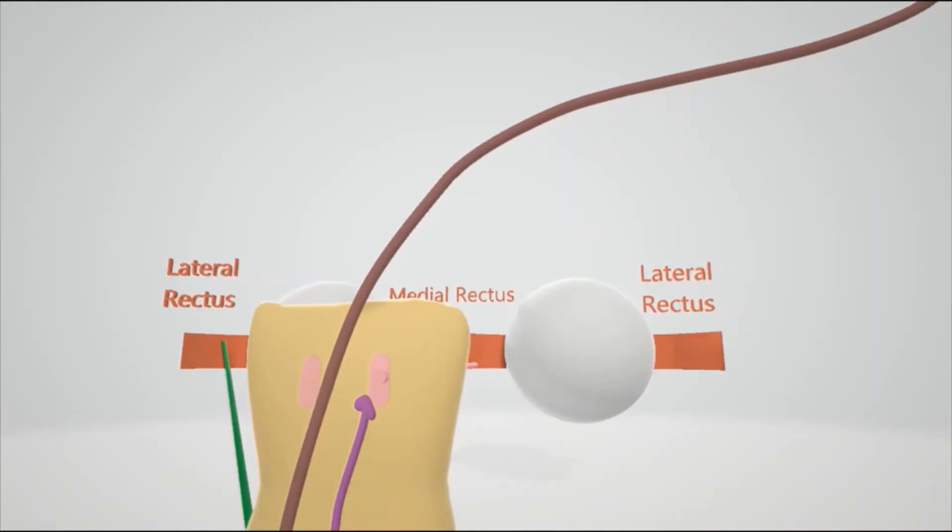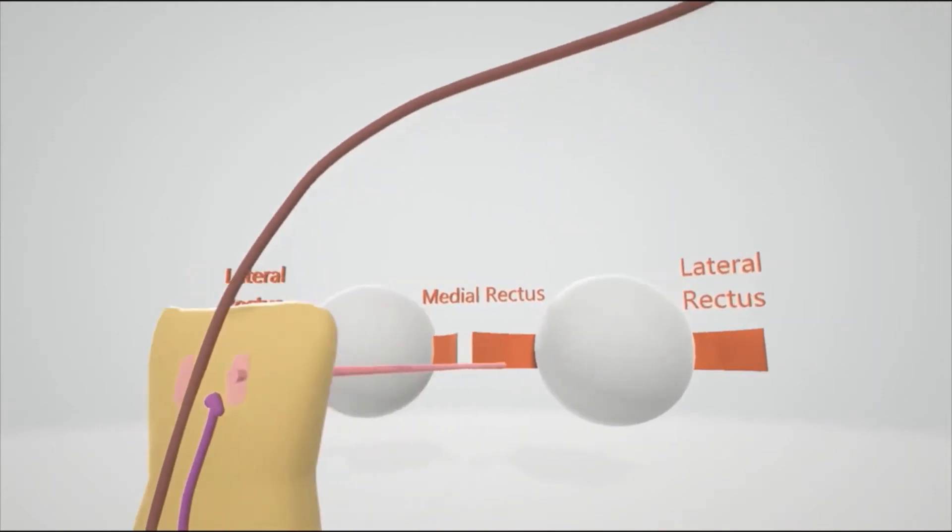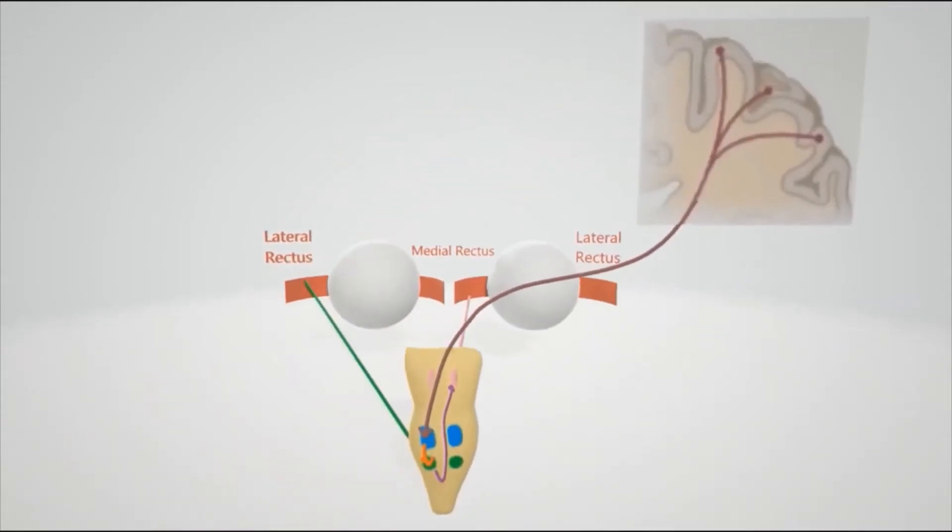That's another signal sent from the abducens, and it goes to the right medial rectus. And so what happens is, at the very same time, the lateral rectus on the left and the medial rectus on the right can contract. That is the medial longitudinal fasciculus.